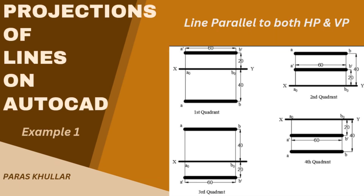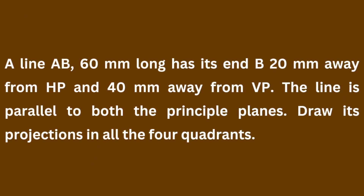Hello students. In this video we will discuss the topic of projections of lines. We will draw the projection of a line when it is parallel to both the principal planes, using AutoCAD. The question says: line AB, 60mm long, has its end B 20mm away from HP and 40mm away from VP. The line is parallel to both principal planes. Draw its projections in all 4 quadrants.